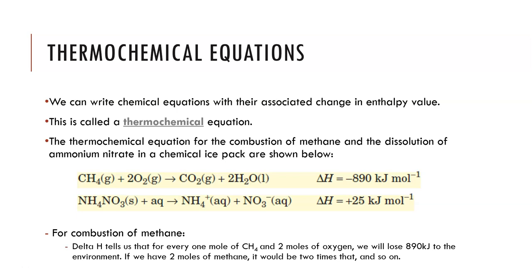A thermochemical equation for the combustion of methane or the dissolution of ammonium nitrate would be written with an associated delta H value attached to the equation. If a question asks for a thermochemical equation and does not provide a delta H with kilojoules per mole including the sign, we will not be given the mark. For the combustion of methane, one molar equivalent of methane plus two molar equivalents of oxygen produces carbon dioxide gas and water. The enthalpy change for this is negative 890 kilojoules per mole — the negative sign shows it is an exothermic reaction, indicating the amount of energy given off to the surroundings per mole of methane burnt.